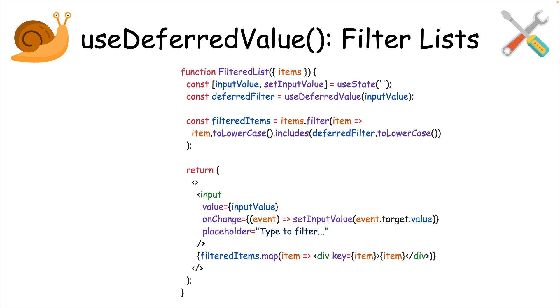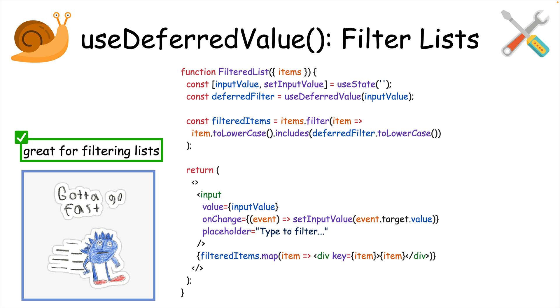Just like the useTransition example, useDeferredValue is best for things like filtering lists. This leads to the same improved user experience as useTransition, but without you having to manually start the transition or use any pending state.